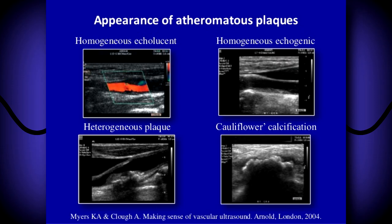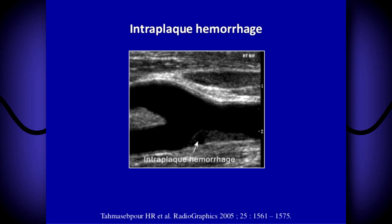A few things to consider when scanning plaques is their appearance. You want to differentiate whether the surface is smooth or irregular, and pay attention to the texture — whether it's homogeneous, which is usually a fatty plaque, or heterogeneous, which can contain calcium. You also want to keep an eye out for any intraplaque hemorrhage or ulceration.